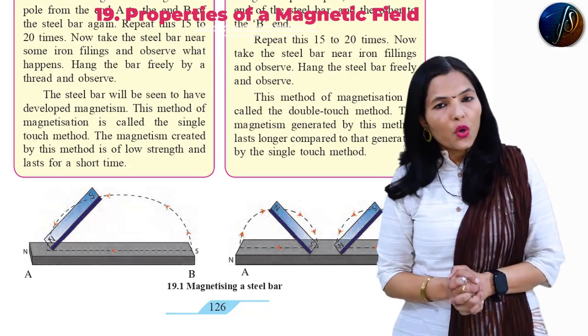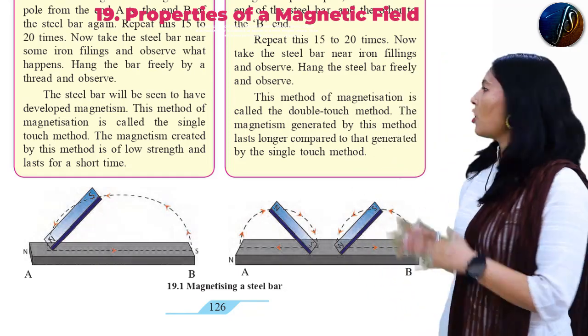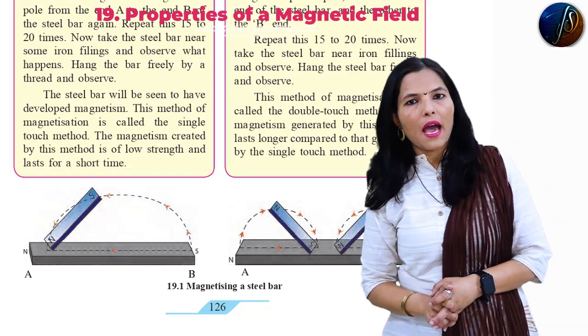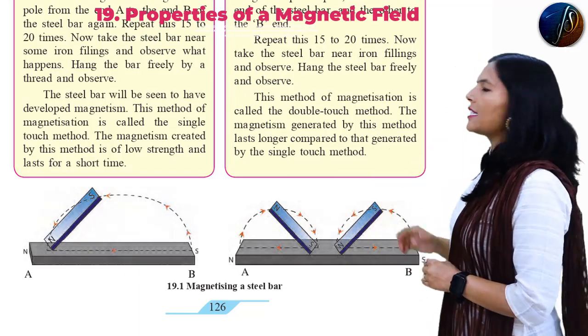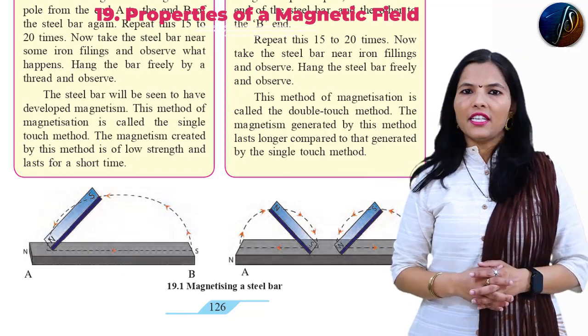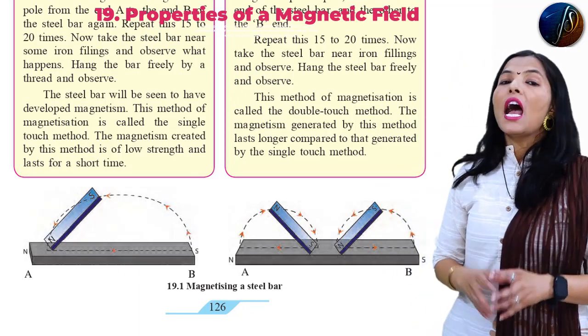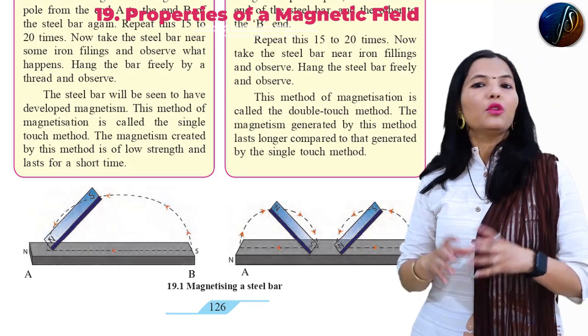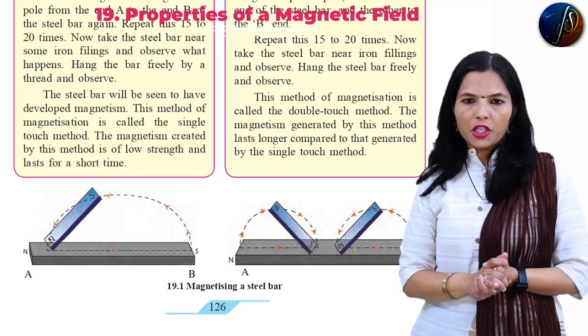So students, there are two types of methods for producing magnetism in a steel bar. The first one is the single touch method and the other is the double touch method — also called the single sparship method and the double sparship method.